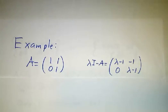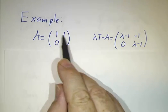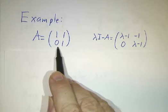So let's see how a matrix can fail to be diagonalizable. The standard example is the matrix [1,1;0,1].